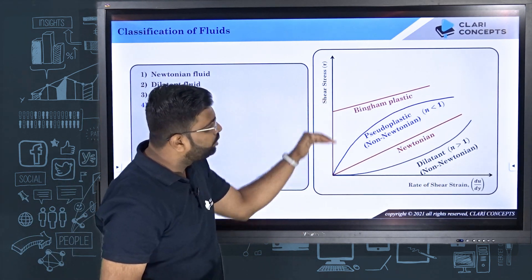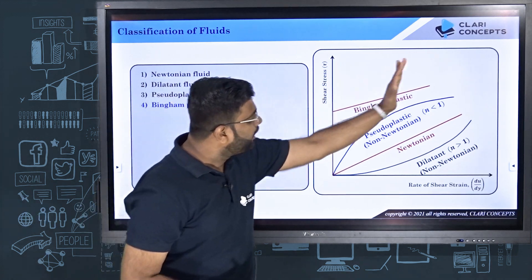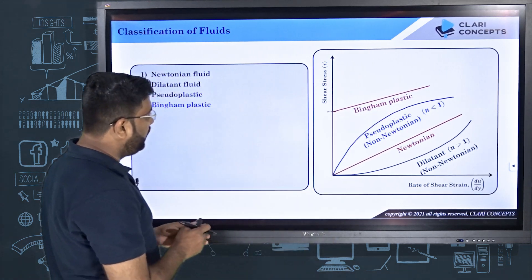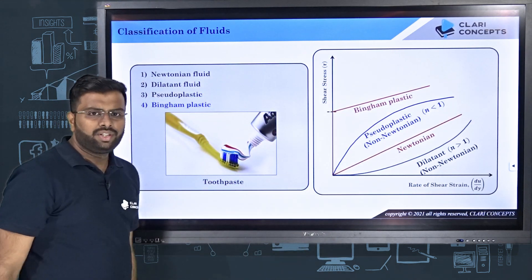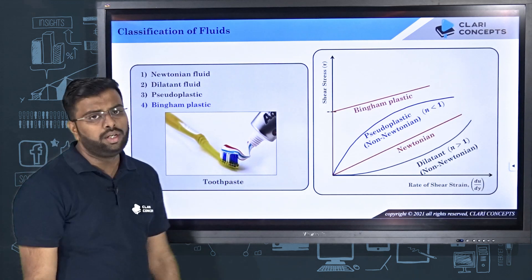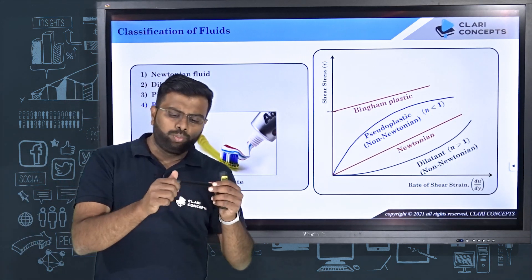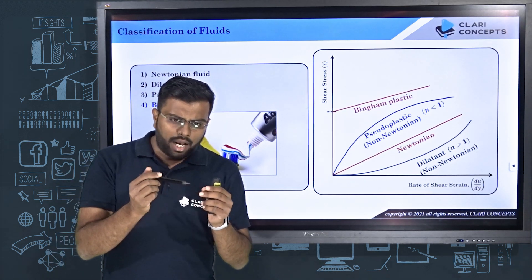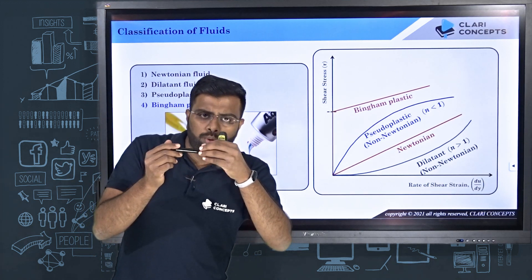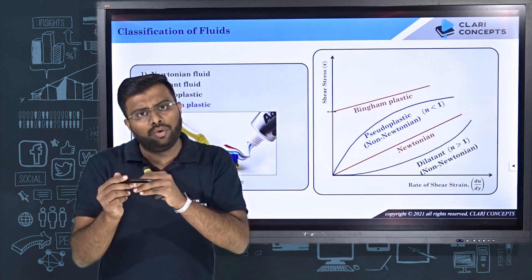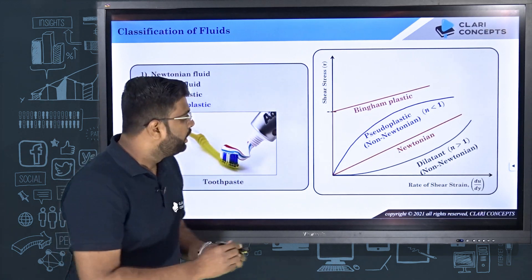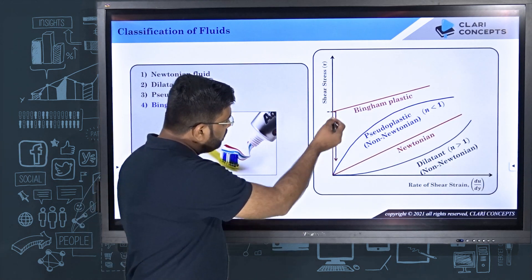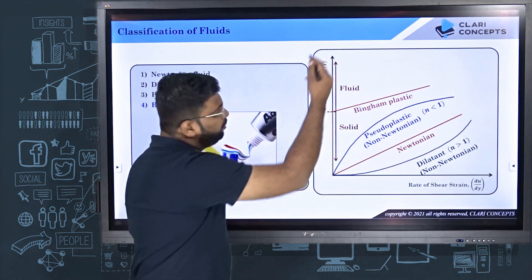Up to a certain value of stress there is no shear strain — no movement at all. Beyond that, the rate of shear strain increases and the fluid begins to flow. A classic example is toothpaste: if you apply force beyond a certain threshold, it flows; below that value it behaves as a solid material. Bingham plastics behave as a solid below critical stress and as a fluid above the threshold shear stress.